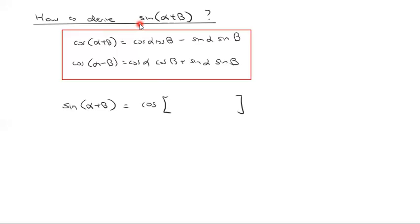Cosine of something must equal sine of something. If we think of the whole thing as theta and brainstorm over things we've talked about, what goes into the cosine? The answer is 90 minus theta — that's probably the easiest option.